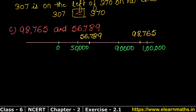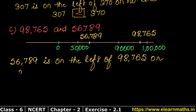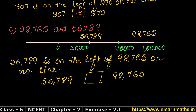We have plotted both numbers on the number line. The number closer to 0 is 56,789, so that is on the left-hand side. 98,765 is on the right-hand side, which means it is bigger. So the answer is: 56,789 < 98,765, with the sign opening toward 98,765.